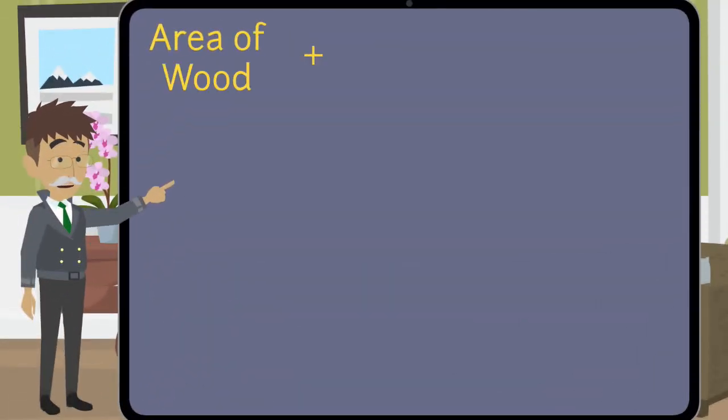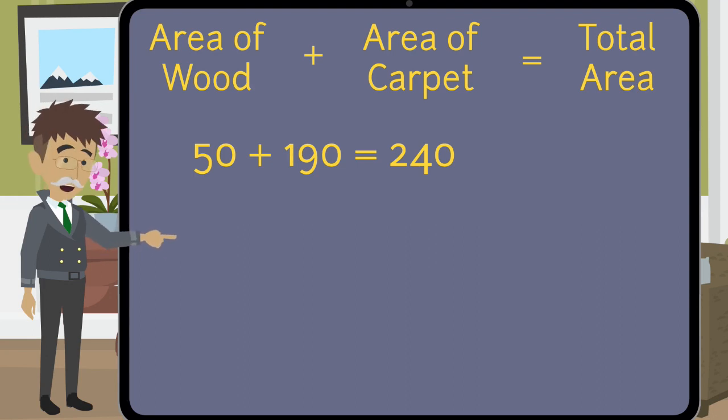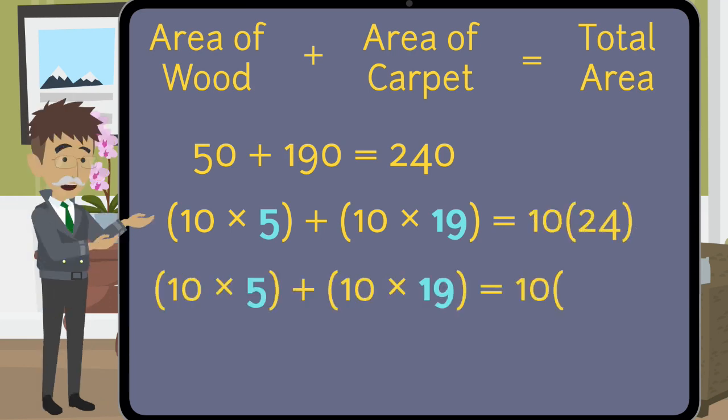This leads to two pieces of exciting math you can see with the area model. One comes from breaking down the previous area statement. I will start with the first example with a 5 foot long dining area. The 50 came from finding the area by multiplying the room's width, 10, by the length of the wood section, 5. The area of the carpet came from multiplying the width of the room by the remaining length, or 19. The area of the entire room is the width, 10, multiplied by the length, 24. Now, notice that the length of the room can be represented by the sum of the two lengths, 5 and 19.